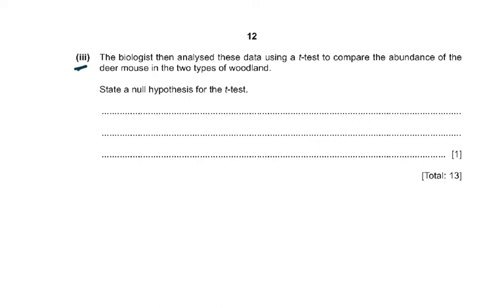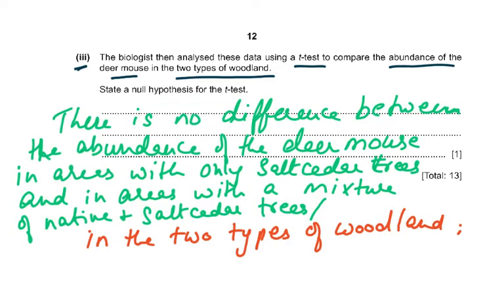Part 3: the biologist analyzed the data using a T-test to compare the abundance of the deer mouse in the two types of woodland. State the null hypothesis. The null hypothesis is: there is no difference between the abundance of the deer mouse in areas with only salt cedar trees and areas with a mixture of native and salt cedar trees. The null hypothesis always negates the research hypothesis.